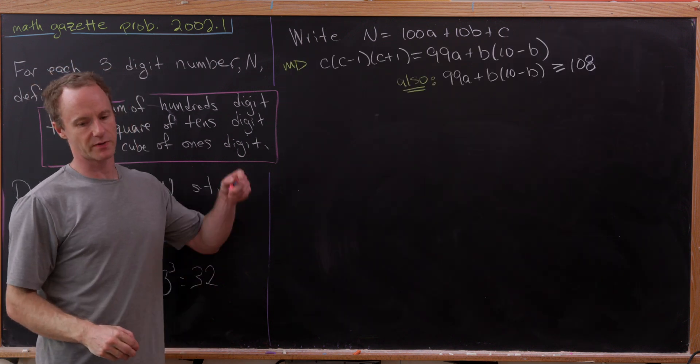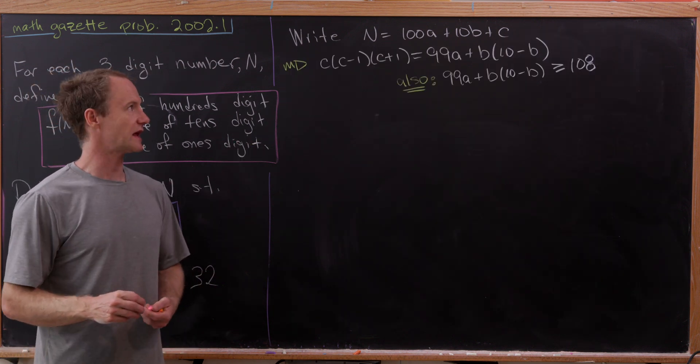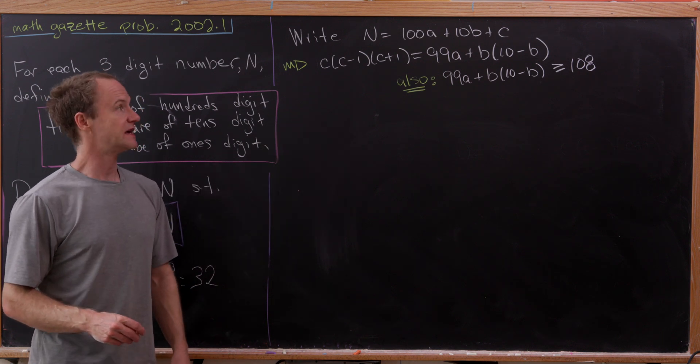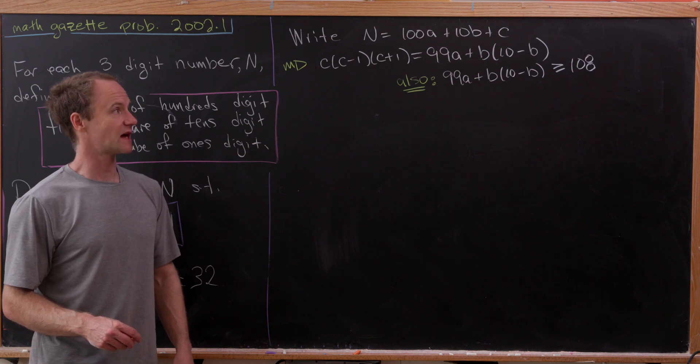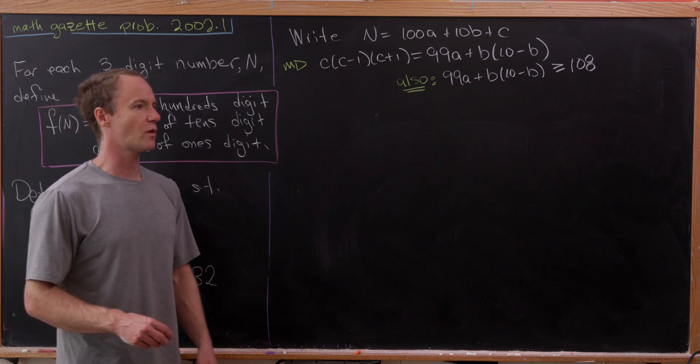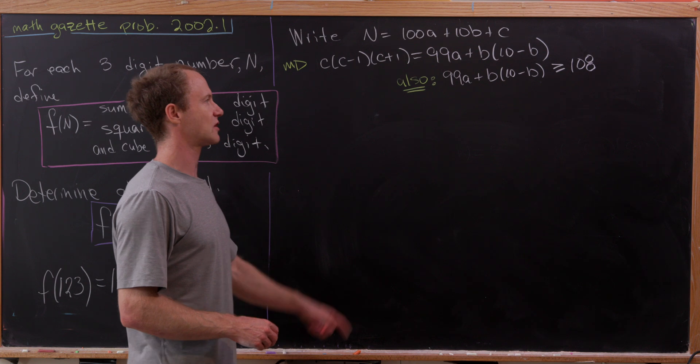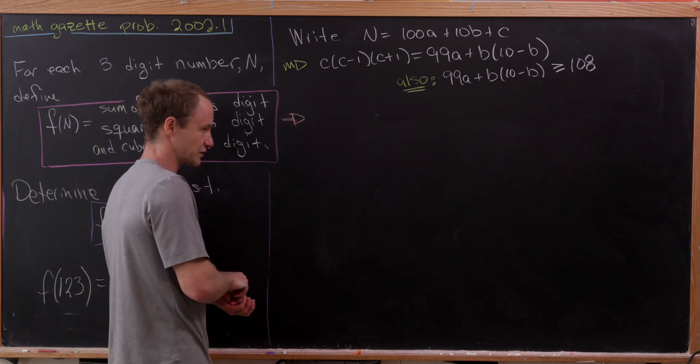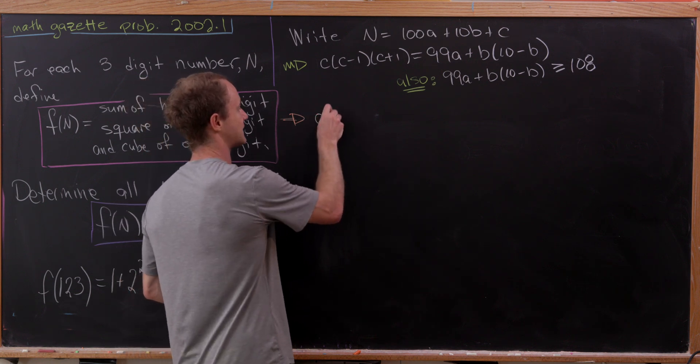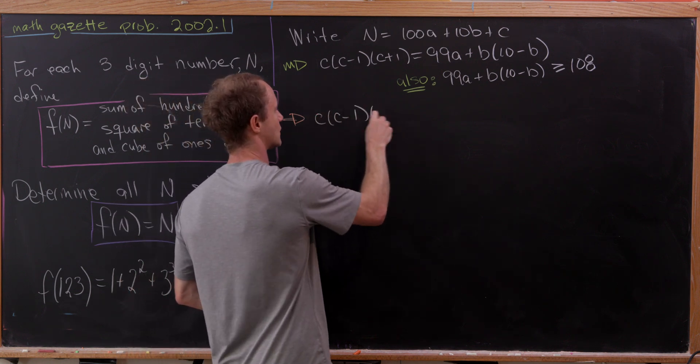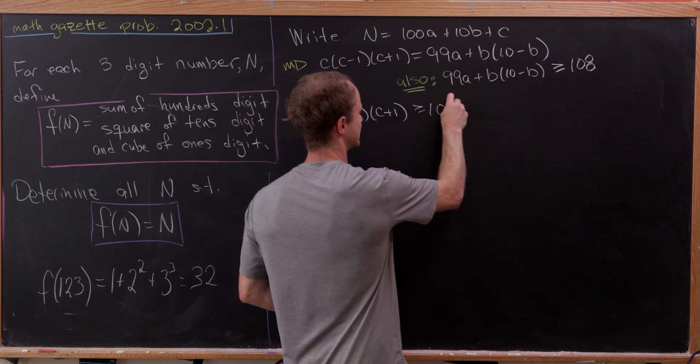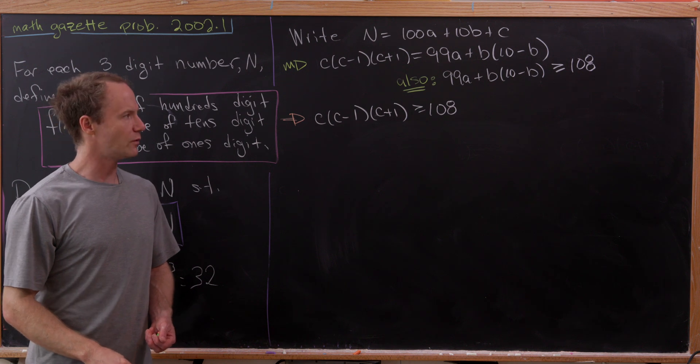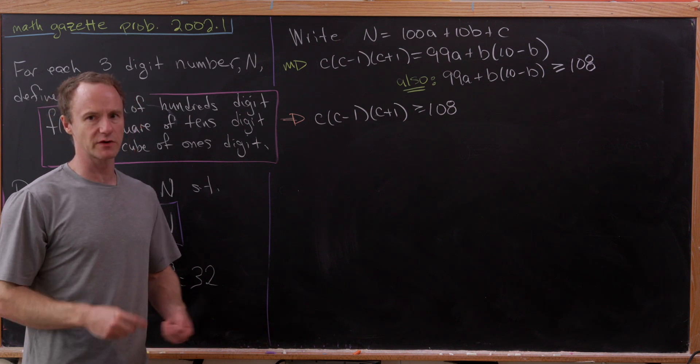So here's where we ended up. Given our condition that we need n to be f of n, we got this equation: c times c minus 1 times c plus 1 is equal to 99a plus b times 10 minus b. And through some inequality arguments, we determined that that right-hand side had to be bigger than or equal to 108. But the right-hand and the left-hand side are equal to each other. So that means that this left-hand side also has to be bigger than or equal to 108.